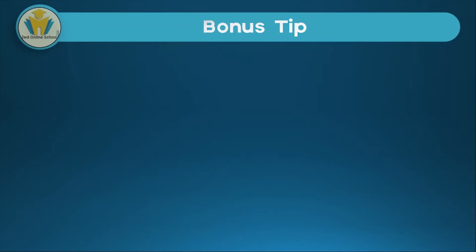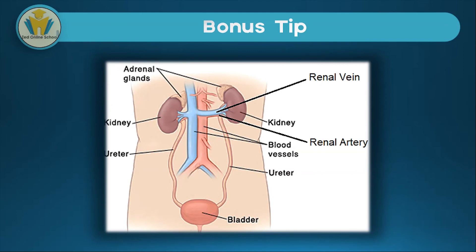Thanks for watching till this part of the video. Here is a bonus tip: when studying excretion, we focus on a specific collection of organs that form a system called the urinary system. The picture here shows the urinary system, which includes the kidneys — an excretory organ we looked at earlier. When you study excretion, make sure you understand the organs in this system, how they work together, and how they perform the process of excretion.